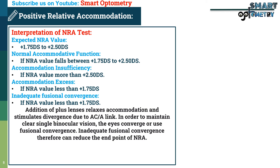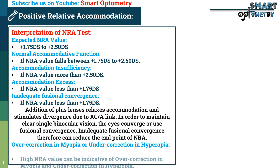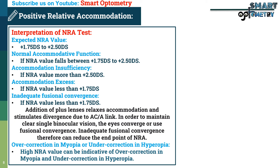Addition of plus lenses relaxes accommodation and stimulates divergence due to the AC/A link. In order to maintain clear single binocular vision, the eyes use fusional convergence. Inadequate fusional convergence can therefore reduce the endpoint of negative relative accommodation. NRA can identify over-correction in myopia and under-correction in hyperopia. High NRA value can be indicative of over-correction in myopia and under-correction in hypermetropia.